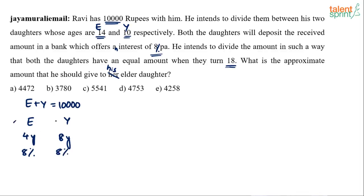We know their principal amounts, we know the time periods, we know the rates of interest. The total amount they receive at the end should be equal — the amount received by the elder daughter should equal the amount received by the younger daughter, such that both have equal amounts when they turn 18.